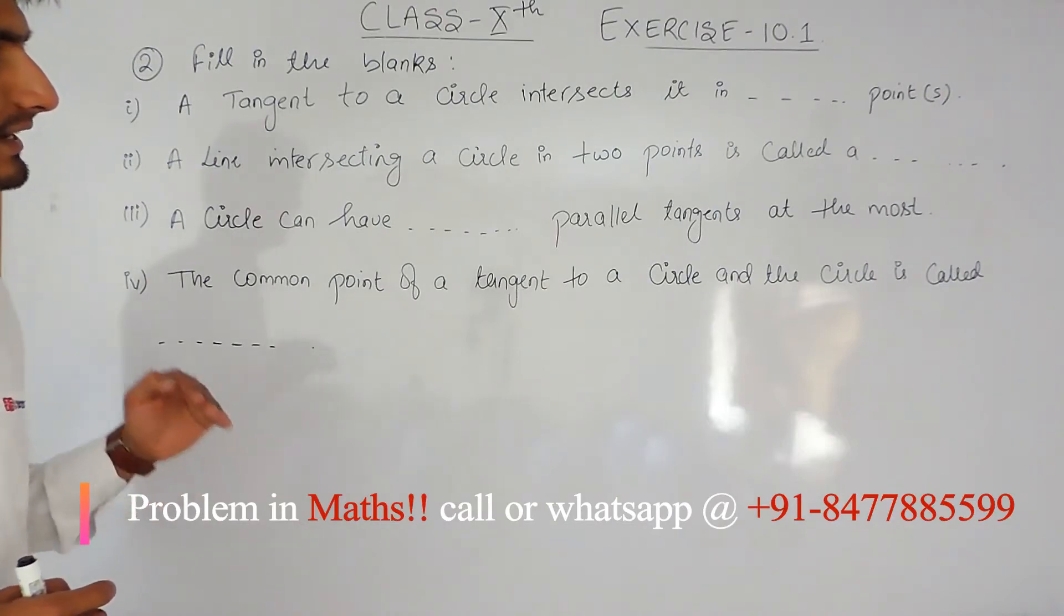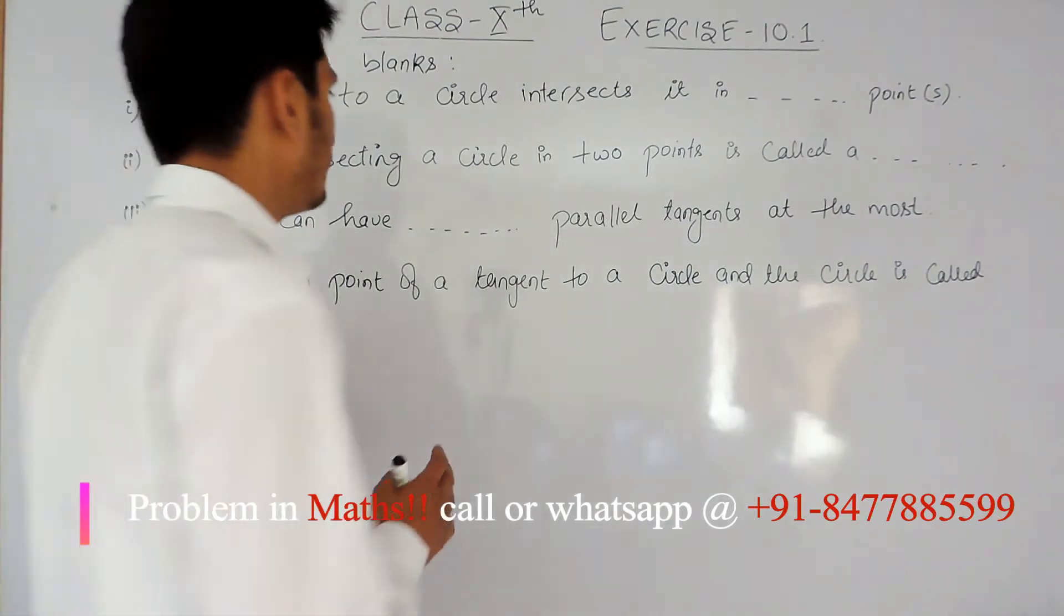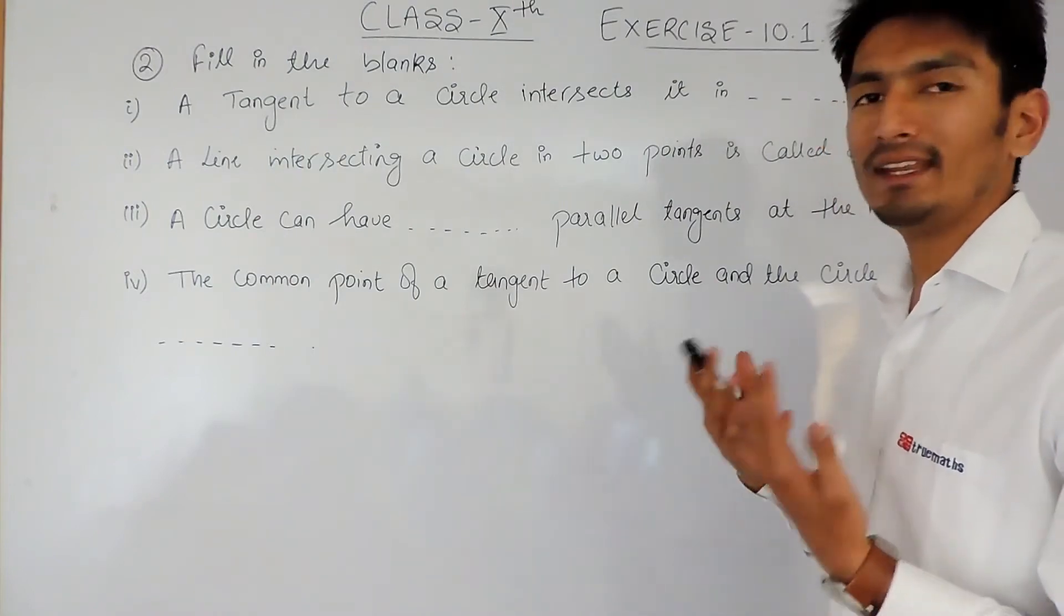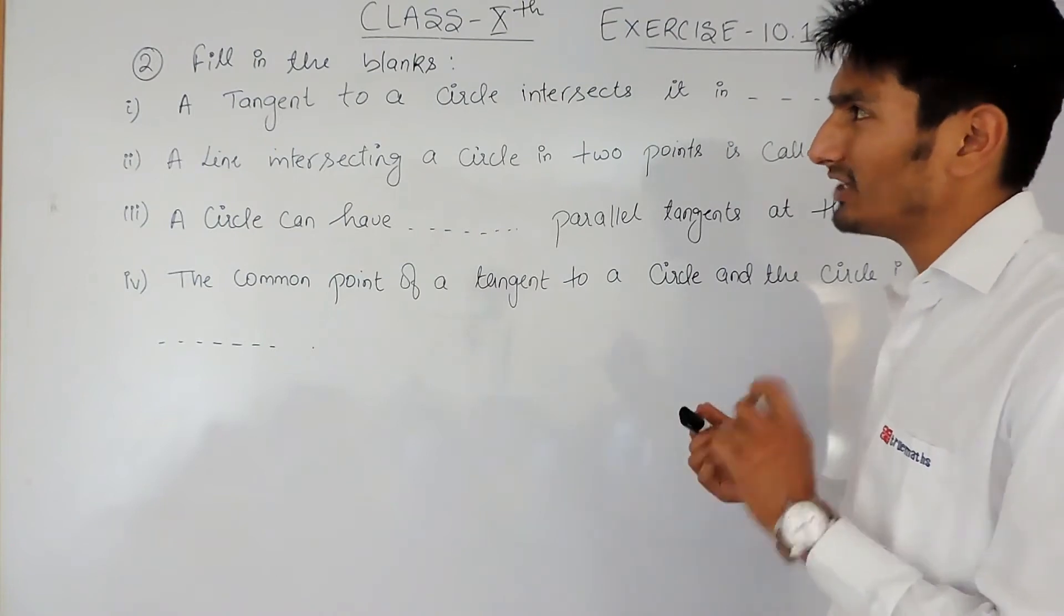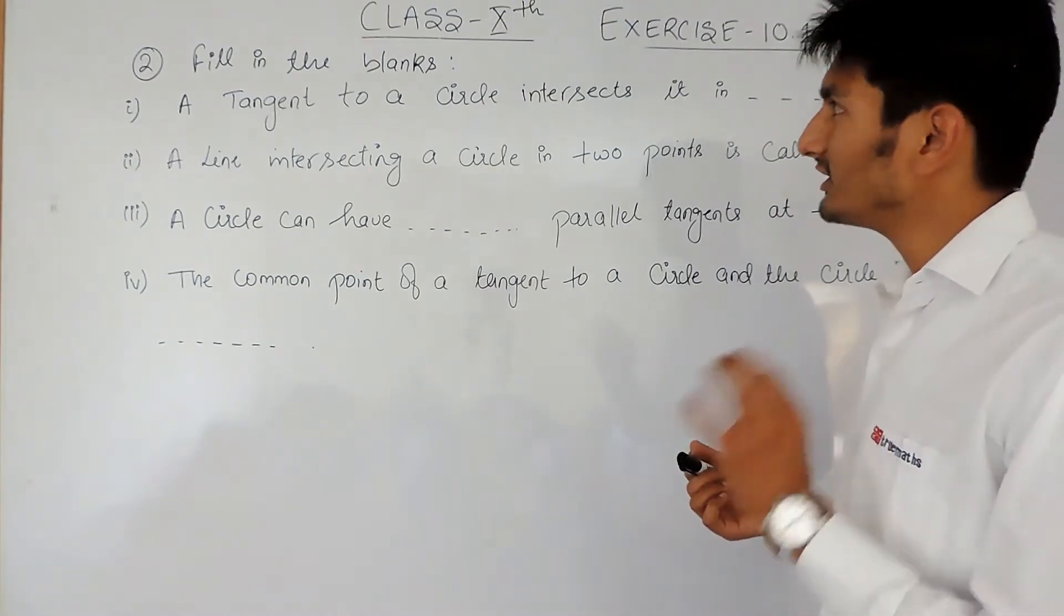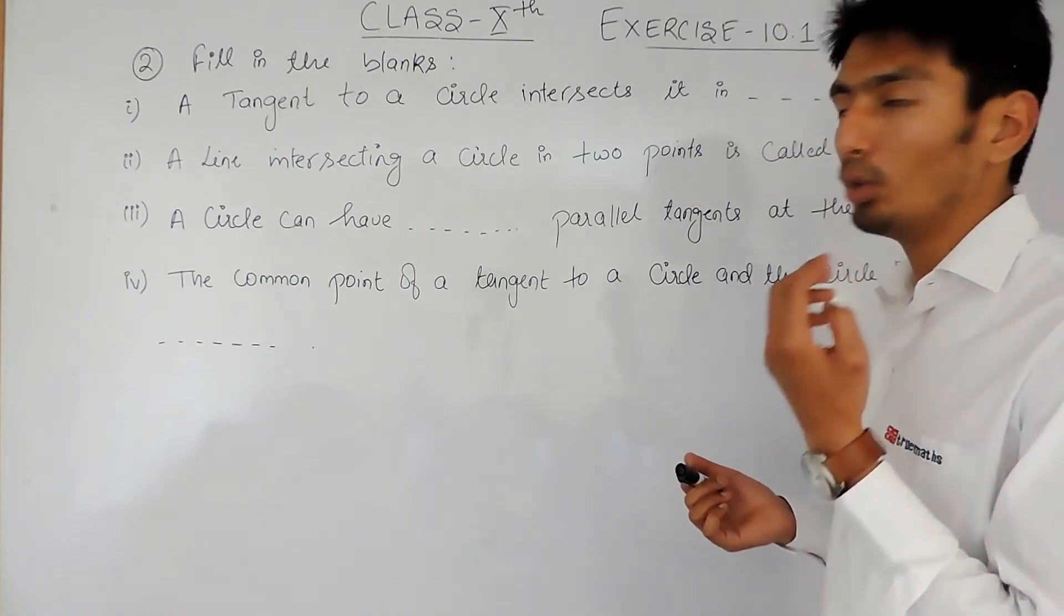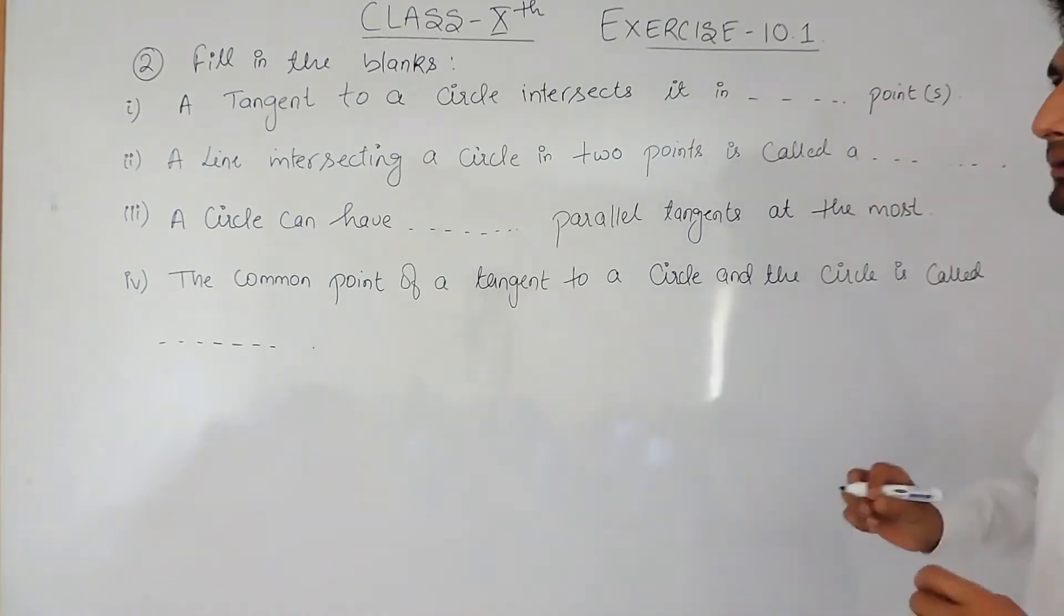Now, in the previous video we already discussed what a tangent is. A tangent is a line which intersects a circle at only one point, or you can say exactly one point.